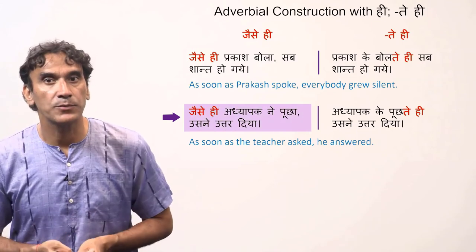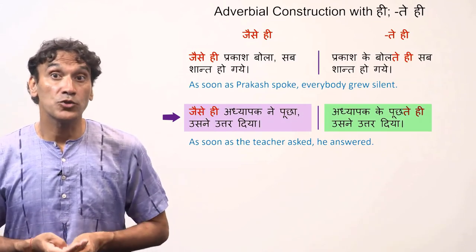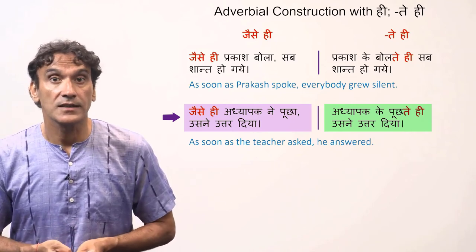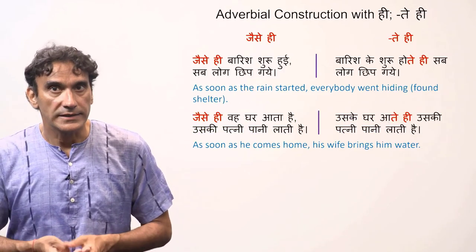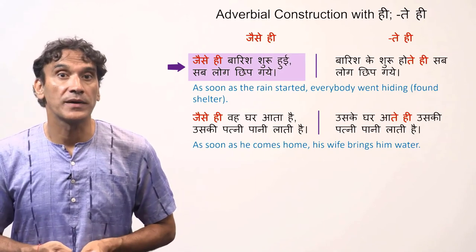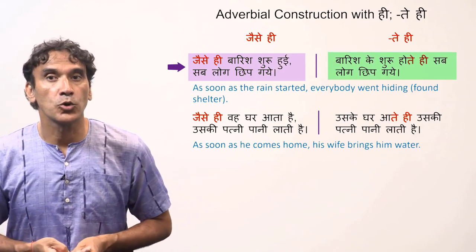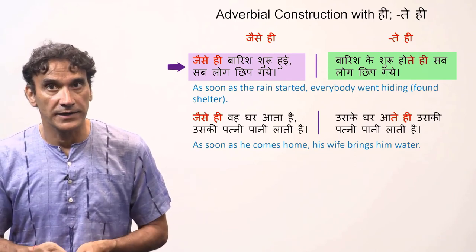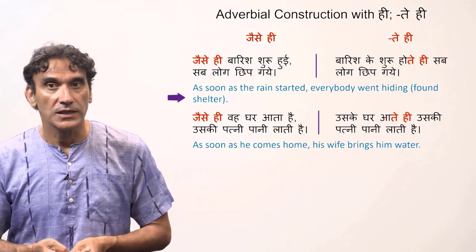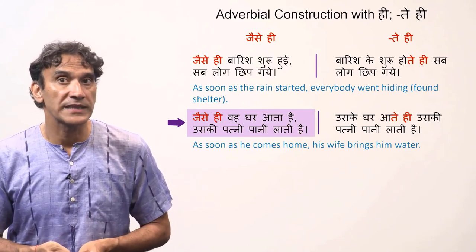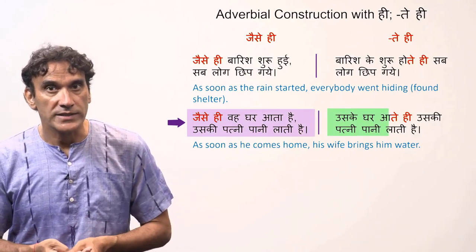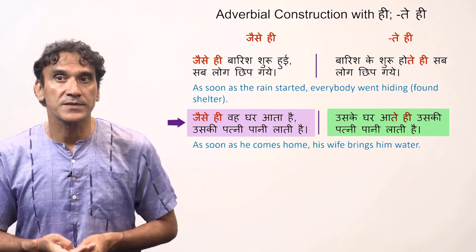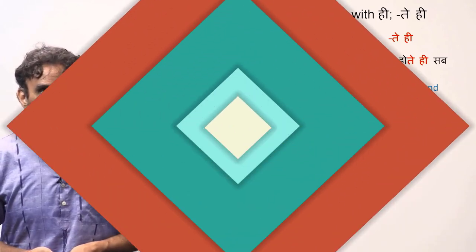'Jaise hi adhyapak ne puchha, usne uttar diya' — 'Adhyapak ke poochtehi, usne uttar diya' — as soon as the teacher asked, he answered. 'Jaise hi baarish shuru hui, sab log chhip gaye' — 'Baarish ke shuru hotehi, sab log chhip gaye' — as soon as the rain started, everybody went hiding and found shelter. 'Jaise hi wo ghar aata hai, uski patni paani lati hai' — 'Uske ghar aatehi, uski patni paani lati hai' — as soon as he comes home, his wife brings him water.